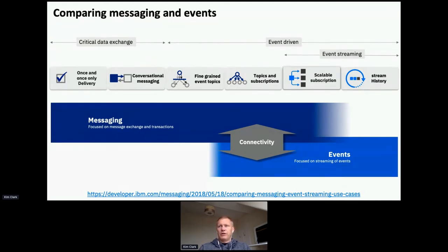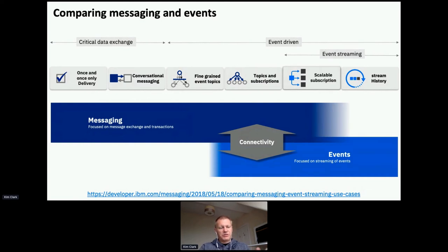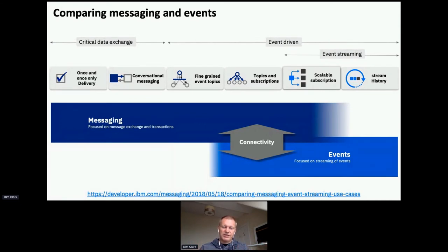Moving across: scalable subscription — scaling up the number of consumers — differs between the two in how consumer groups are handled, which is quite interesting. Then on the right-hand side there's stream history, a feature unique to events. While you can have permanent messages in a queue, most messaging environments say a deep queue is a bad queue — empty queues are good queues. With eventing we have an event log, and stream history effectively keeps that log of messages.